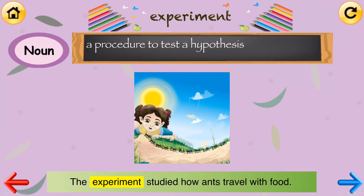Experiment. Experiment means a procedure to test a hypothesis. Experiment is a noun. An example of experiment is: the experiment studied how ants travel with food.